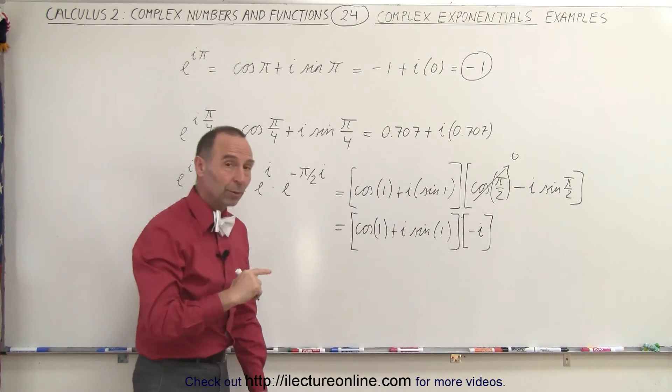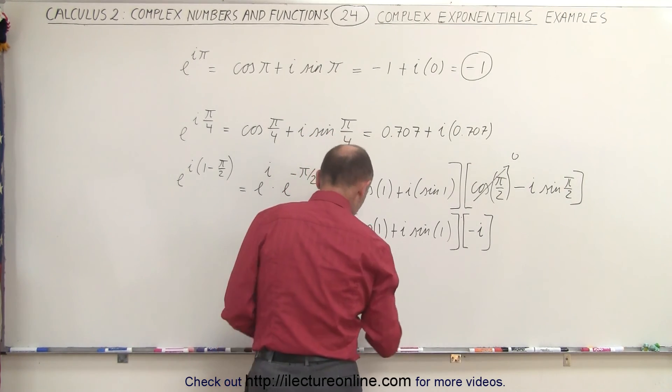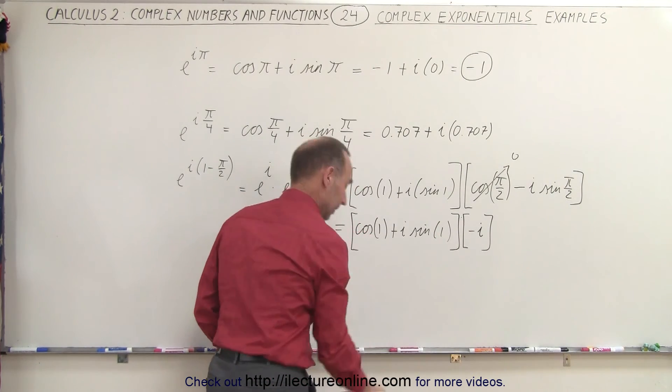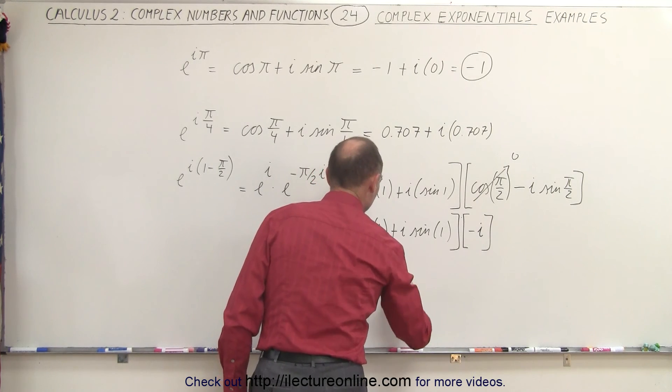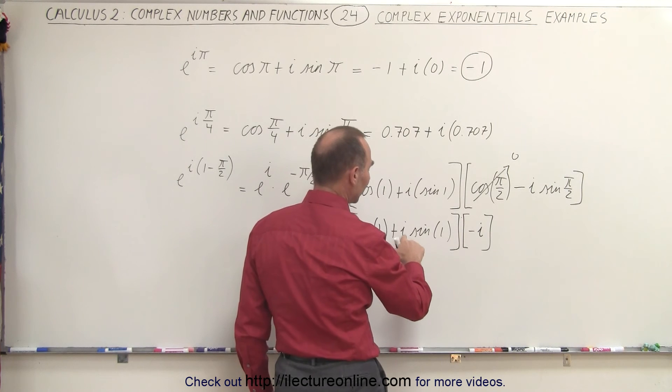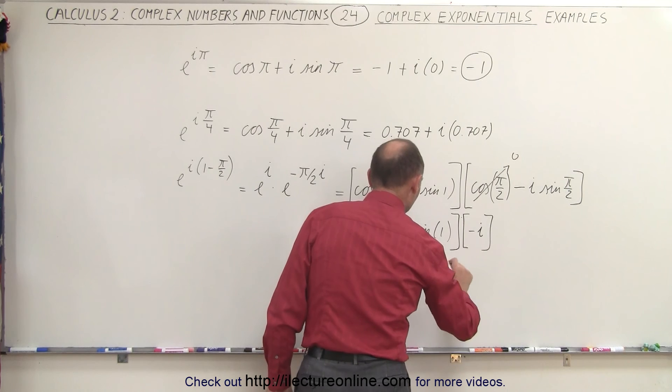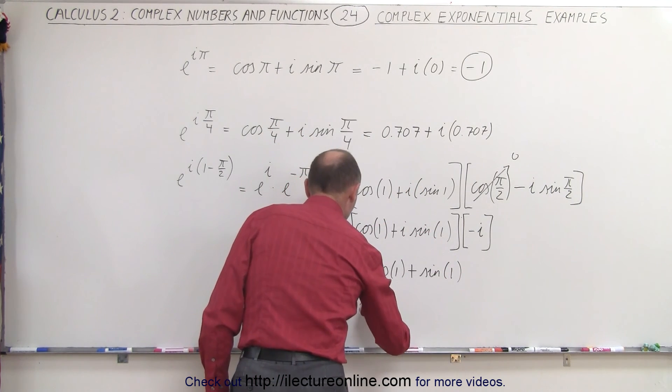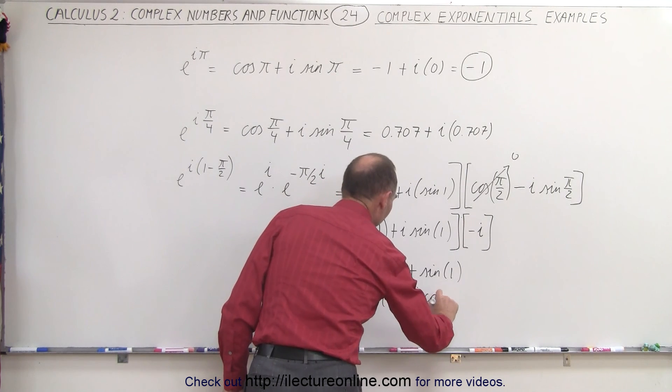So now when we multiply that through, that becomes the following. This becomes equal to, or I should put the i first. Let me do that again. Then, so that would be minus i times the cosine of one, and i times i is i squared, that's a negative one, times a negative becomes positive. That would be the sine of one, and then we can reverse the order and write it as the sine of one minus i times the cosine of one.